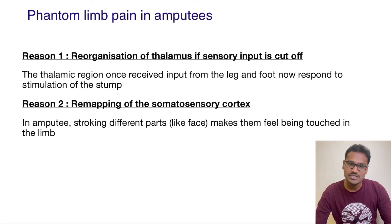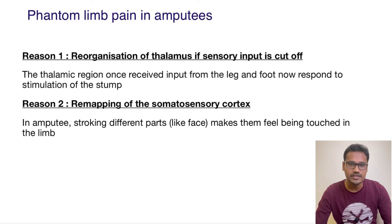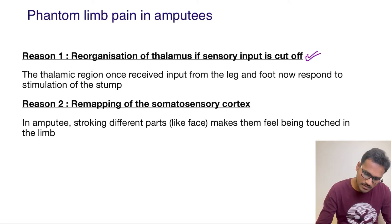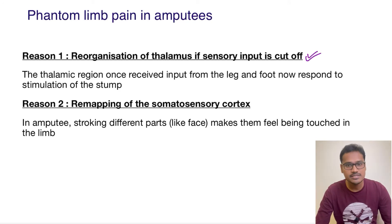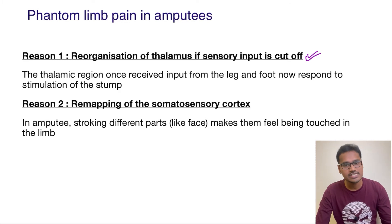The reason behind phantom limb pain is simply that brain activity is going to be reorganized. This is also called cortical plasticity, or reorganization of the brain areas. The first reason quoted for this is the reorganization of the thalamus when the sensory input is cut off. The thalamus is one of the organs which perceives pain, even in the case of lower mammals.